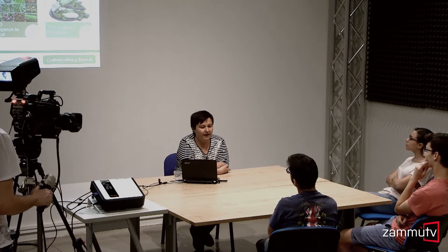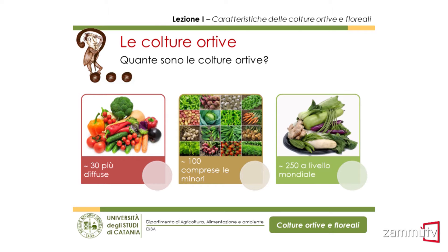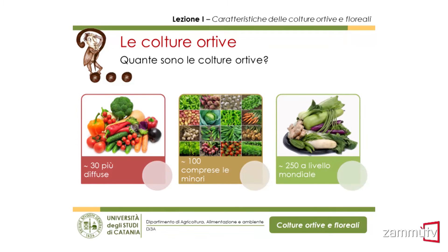Quante sono queste colture? Le colture più importanti e diffuse non sono tantissime: sono circa una trentina. Se consideriamo anche le colture minori, il numero sale a circa 100. Se consideriamo anche quelle minori ma ampiamente utilizzate a livello mondiale, arriviamo a 250. Ma anche questo è solo una parte piccola della potenzialità delle colture ortive: si stima che le piante erbacee utilizzate allo stato fresco, raccolte prima del completamento del ciclo biologico, siano addirittura superiori alle 1500 specie.